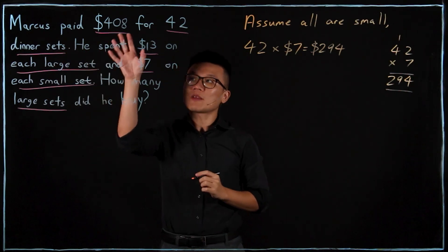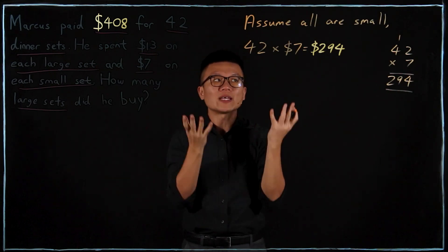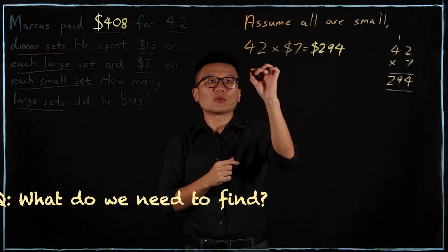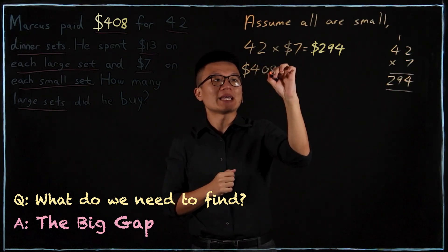Now Marcus paid $408 but he spent $294, so there is an obvious shortfall over here. What do we need to do? We must find the big gap.